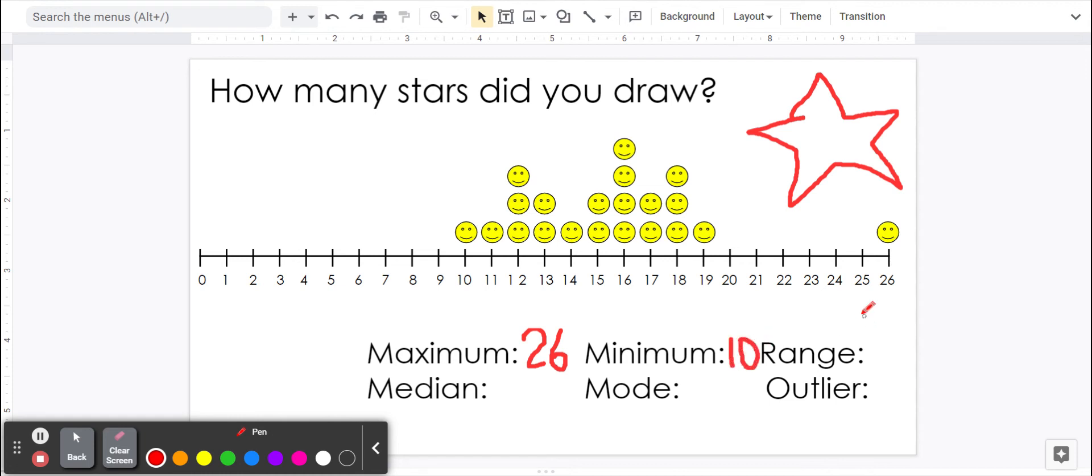The range is the difference between the maximum and the minimum. So we're going to do 26 minus 10, and that gives us 16. That means there's a difference of 16 between the person who drew the most and the least.